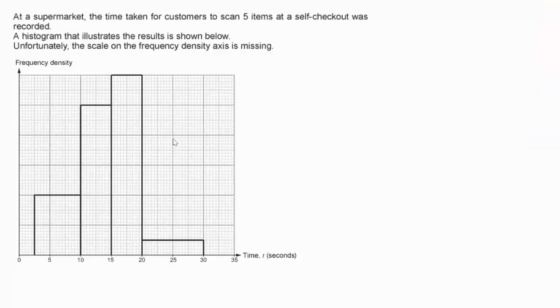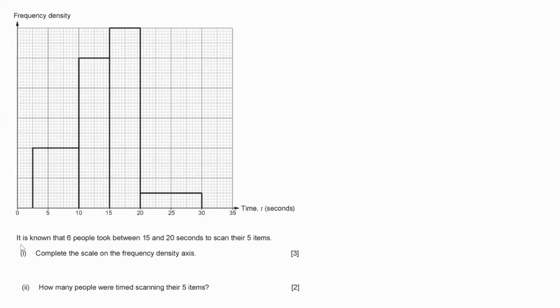Okay, welcome back then. Here's the check-in question. Here's off the exam paper. There's two slides here. So, at the supermarket, the time taken for customers to scan five items at the self-checkout was recorded. A histogram that shows the results is shown below. Unfortunately, the scale is missing from this axis. So, I copied the chart onto the slide. It is known that six people took between 15 and 20 seconds to scan their five items.